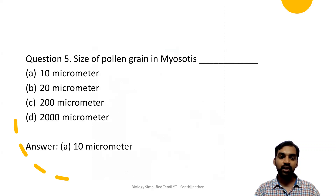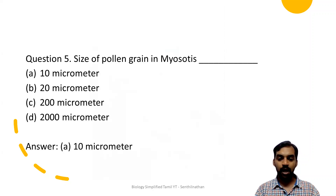Next, the size of pollen grain in Myosotis. In that plant, the pollen grain size is 10 micrometers. This is the data given in the book.